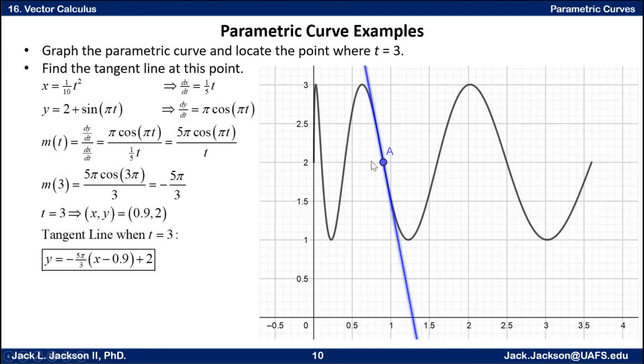The slope as a function of T at any T value here would be dy/dt over dx/dt. So it's this formula, π times cosine of pi T over one-fifth T. Be sure that you have Y on top, X on the bottom for those derivatives, just like we always do for the slope. Don't get it upside down. Here I have fractions inside of fractions, so I multiply top and bottom by 5. That leaves a 5 on the top, gets rid of that one-fifth on the bottom. So there's a simplified version of the slope: 5π times cosine of pi T over T. That's the slope at any particular T value.